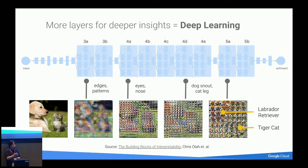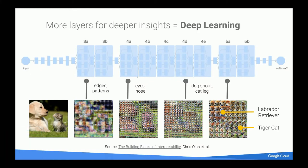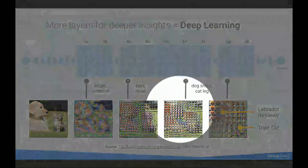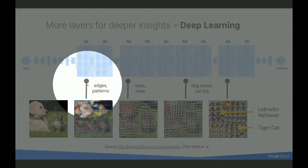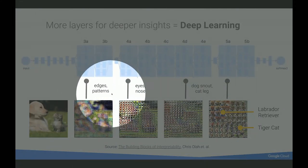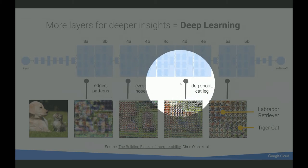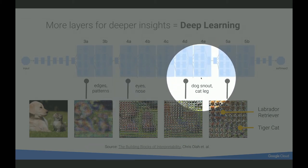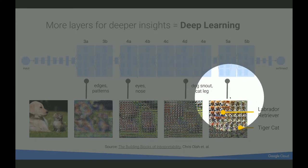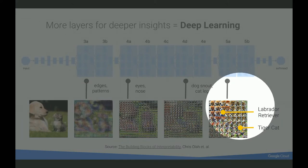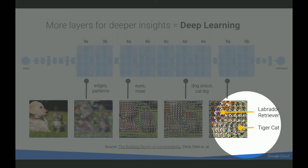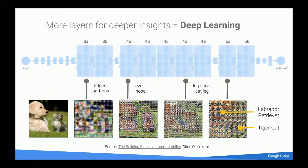If you have 40 or 80 layers between input and output — at Google for production we use the Inception model with 40 or 80 layers — you'd see very high accuracy on recognizing objects in images. Neurons in the lower layers are trained to recognize edges or patterns. Neurons in the middle layers can recognize eyes or noses of animals. Neurons in the higher layers can be smart enough to recognize a dog snout or cat leg, and eventually you'd have a neuron that recognizes specific species — just like humans do.